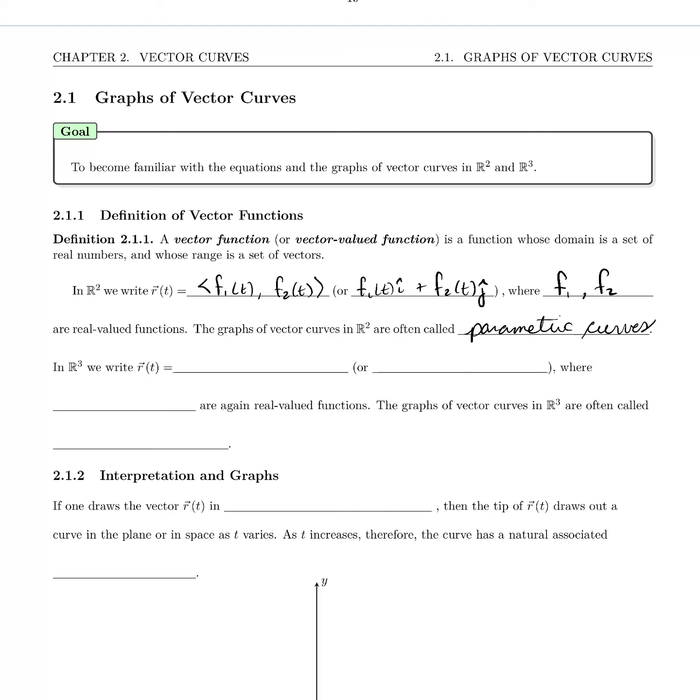In R³ we use a similar notation but of course we've got three components: f₁(t), f₂(t), and f₃(t), or using the ijk notation...